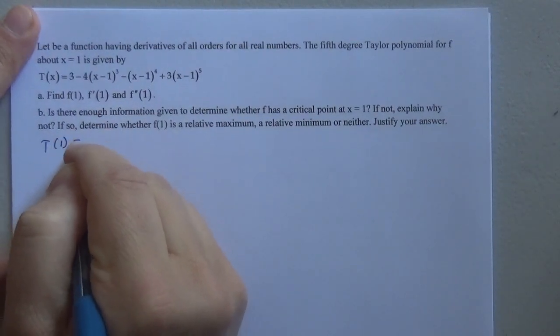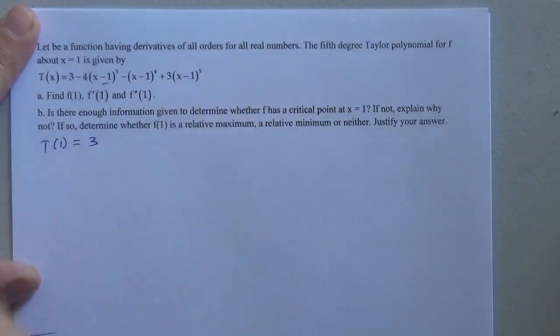So t of 1 is just going to be equal to 3 because these three terms are all going to go to 0.